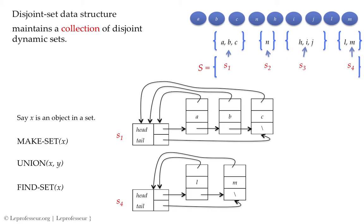Now, if element b and element l make a relationship — they become friends — we want to merge S1 and S4. When we merge, S4 loses its identity because all its elements are merged into S1. You can also think of S1 as a tree with a root pointing to a, then linked with b, and b connected with c. It's a tree structure.